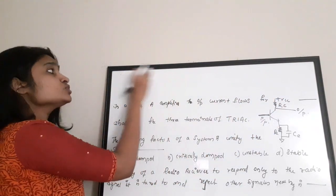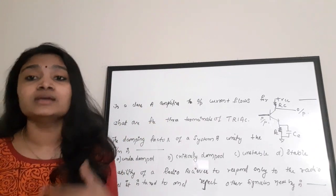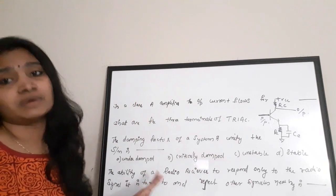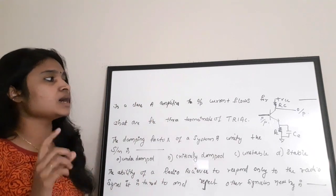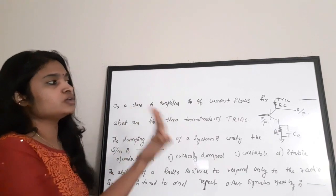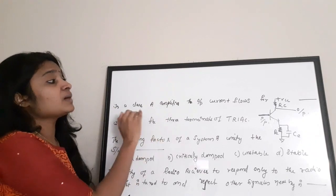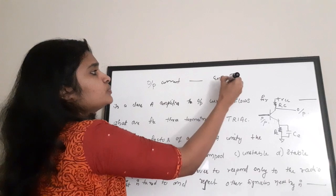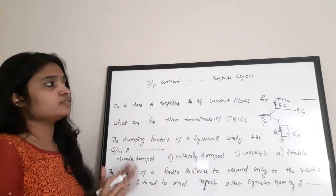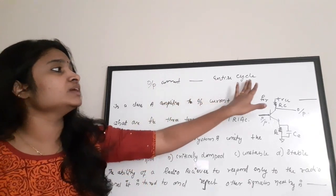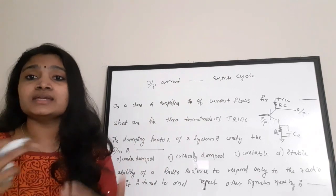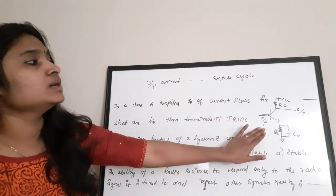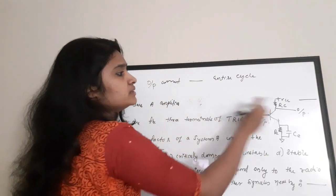When studying these components, if you know the main concepts rather than just memorizing theory, you should be scoring high marks. The next question: in a Class A amplifier, the output current flows for — the basic feature of a Class A power amplifier is that the output current flows for the entire cycle of the input signal. The entire waveform is amplified.